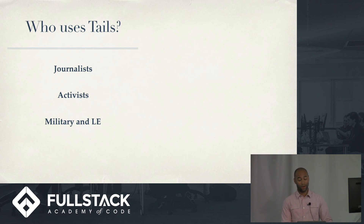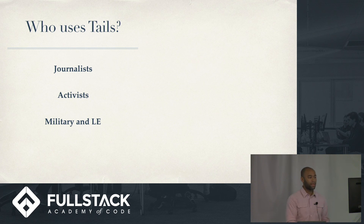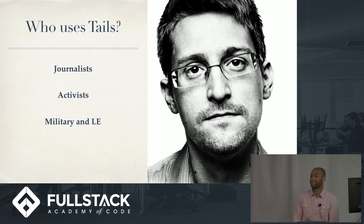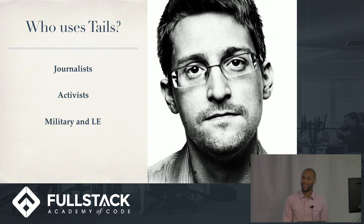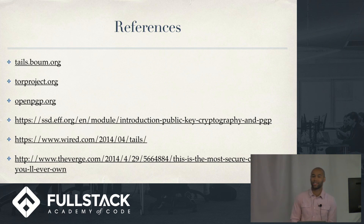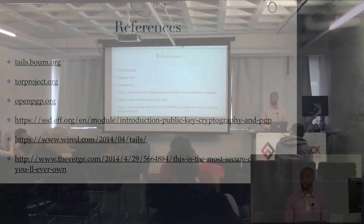Who uses TAILS? Well, journalists use it, activists use it, the military and law enforcement use it to encrypt their communications. And finally, most famous of all — Edward Snowden. He famously evaded the NSA. He used TAILS extensively to hide his whereabouts while still being able to communicate with journalists and get his story out to the public. Given the current climate, we might need to use that as well. And that's what I've got — thanks for listening.